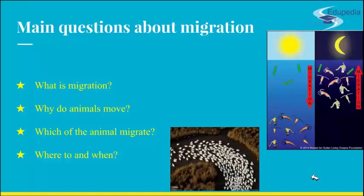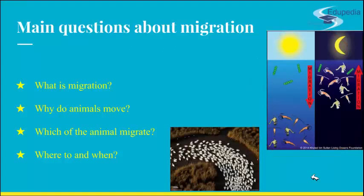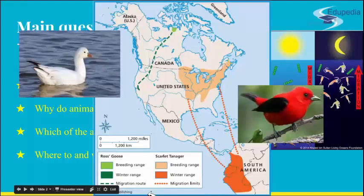Yet here we run into the previously mentioned disagreement about the migration definition. For example, the diurnal vertical migration of plankton, or the night migration of parasitic worms from depth to surface layers of skin — should these be considered migration? But one clear example is migration of North American birds, which is seasonal. 500 out of altogether 650 species known in North America migrate.